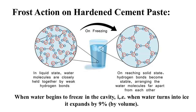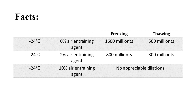The magnitude of this hydraulic pressure depends on the distance to escape boundaries, the permeability of the intervening materials, and the rate at which ice is formed. Close-spaced boundaries are provided by air entraining agents to control this action. For example, with zero percent air entraining agent the elongation is very high, at two percent it can be effectively reduced, and at ten percent there is no appreciable dilation — so air entraining agents can secure concrete from the freeze and thaw process.